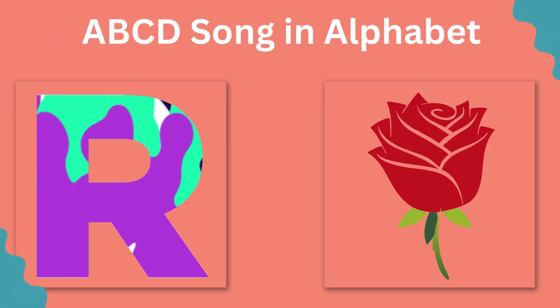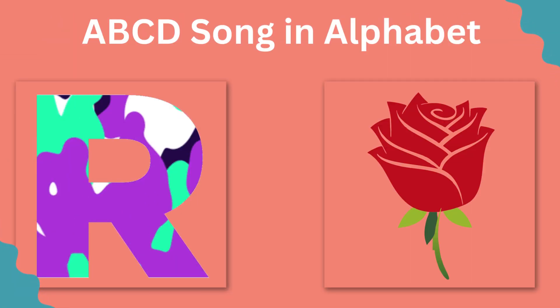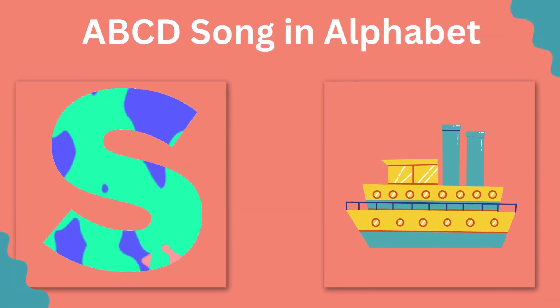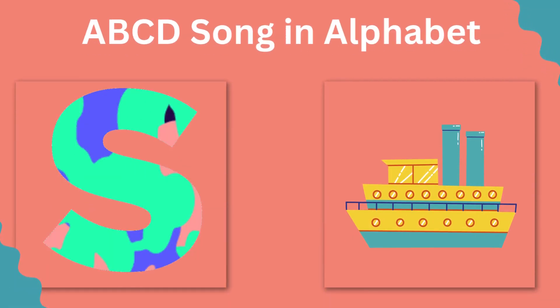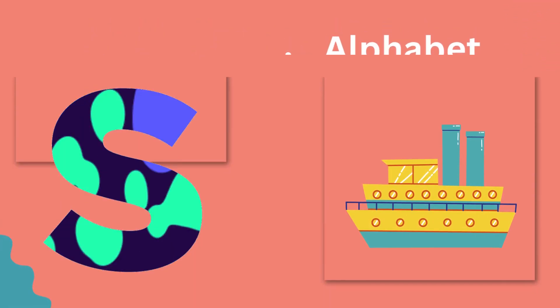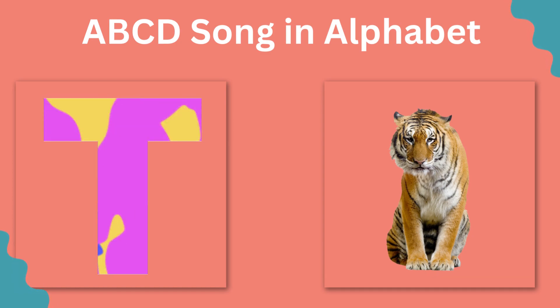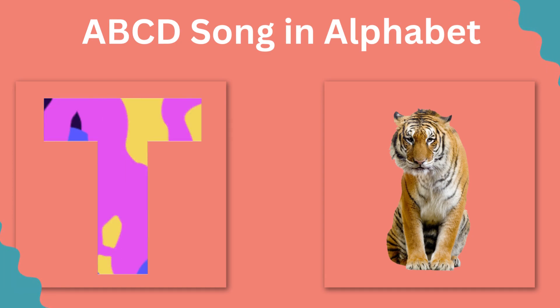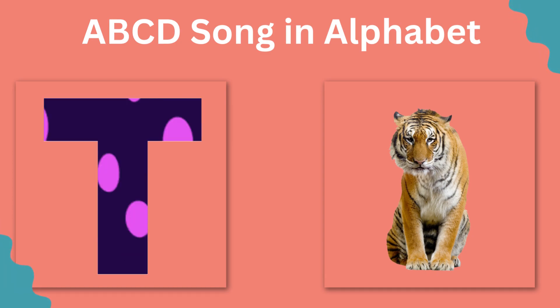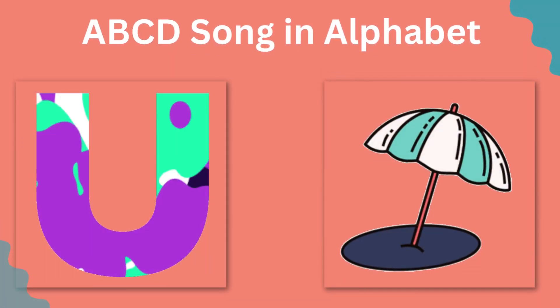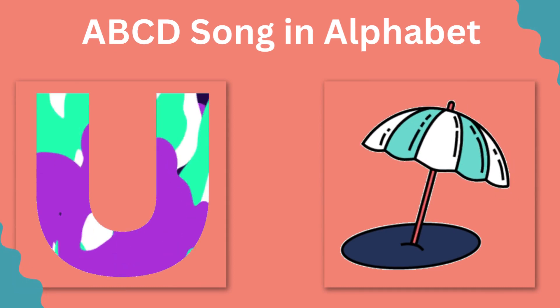Q for Queen, R for Rose, S for Ship, T for Tiger, U for Umbrella.